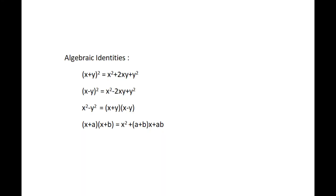Next, algebraic identities. The algebraic identities are: x plus y, the whole square, equal to x squared plus 2xy plus y squared. x minus y, the whole square, equal to x squared minus 2xy plus y squared. x squared minus y squared equal to x plus y into x minus y. x plus a into x plus b equal to x squared plus (a plus b) into x plus ab.